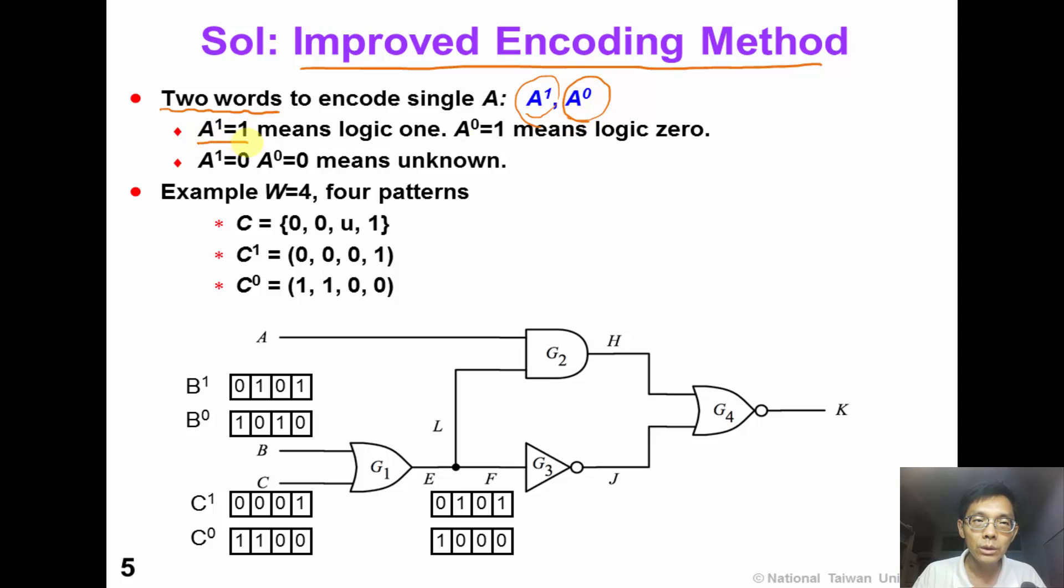When A1 equals 1, it means a logic 1. When A0 equals 1, it means a logic 0. When both A1 and A0 are 0, it means unknown. For the same circuit example, now we have two words for primary input C. We have C1 and C0. The encoding represents logic values accordingly, with 0 0 representing unknown.